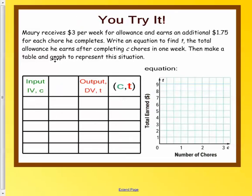So this is your chance to try this one. I want you to go through and I want you to think what this means. Mari receives $3 per week and an additional $1.75 for each chore he completes. Write an equation to find T, the total allowance he earns after completing C chores in one week. Then make a table. So $3 per week with an additional $1.75 to start. Think about what the equation would be first. In this case, the equation would be 3x for the $3 per week and hopefully you also got $1.75. If you didn't get that, go back and fix your work.